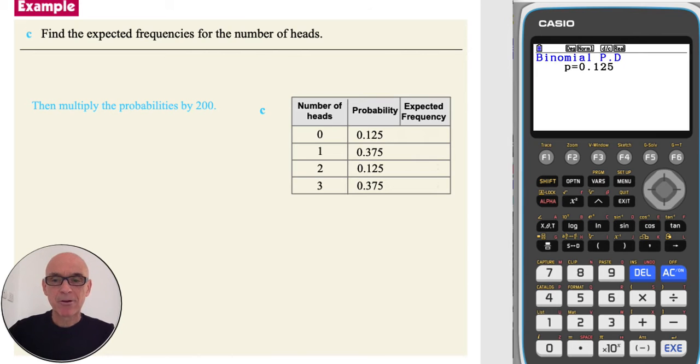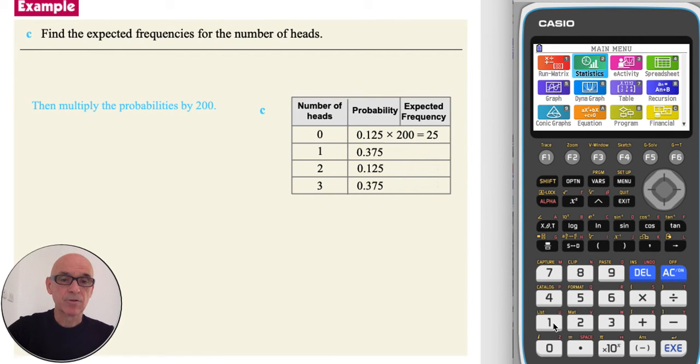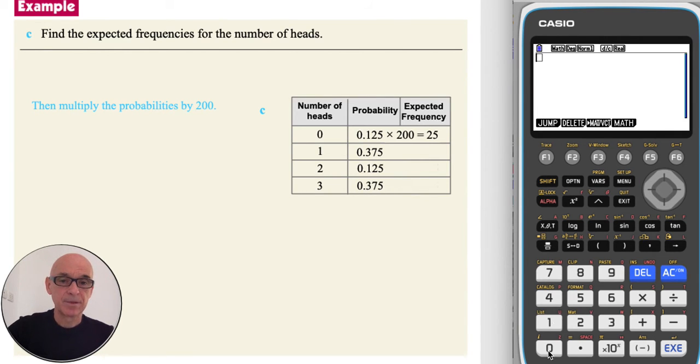Given the probabilities shown. As the experiment was repeated 200 times, we need to multiply these probabilities by 200 to find the expected frequencies. And to do this from the main menu, if we select run matrix and type in the first probability 0.125 and multiply it by 200, giving 25 outcomes. Repeating the process for the other categories, as shown.